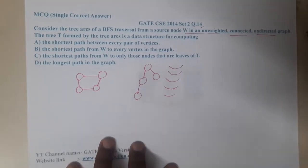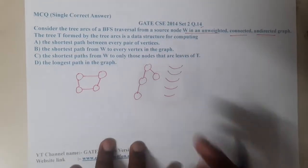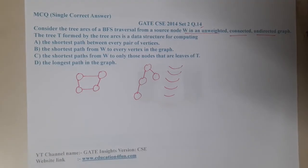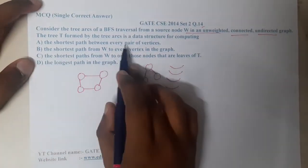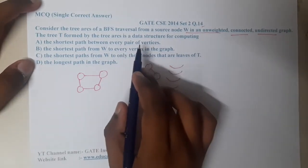If you are working in that way, what will be the thing which you can calculate? The first option is the shortest path between every pair of vertices. Is it possible? Technically it is not possible.